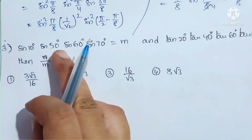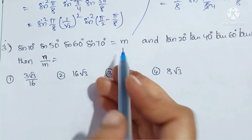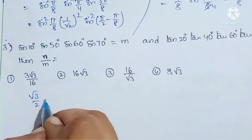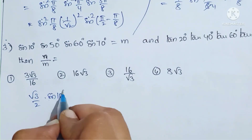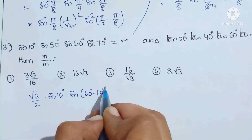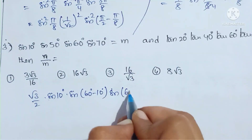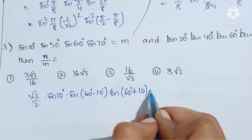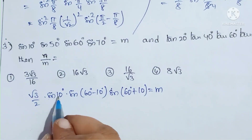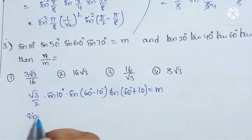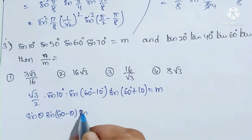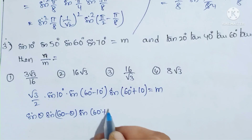Next question: if sin(10°) × sin(50°) × sin(60°) × sin(70°) = M. Since sin(60°) = √3/2, and we note that sin(50°) = sin(60° - 10°) and sin(70°) = sin(60° + 10°), we apply the formula sin(θ)sin(60° - θ)sin(60° + θ) = (1/4)sin(3θ).